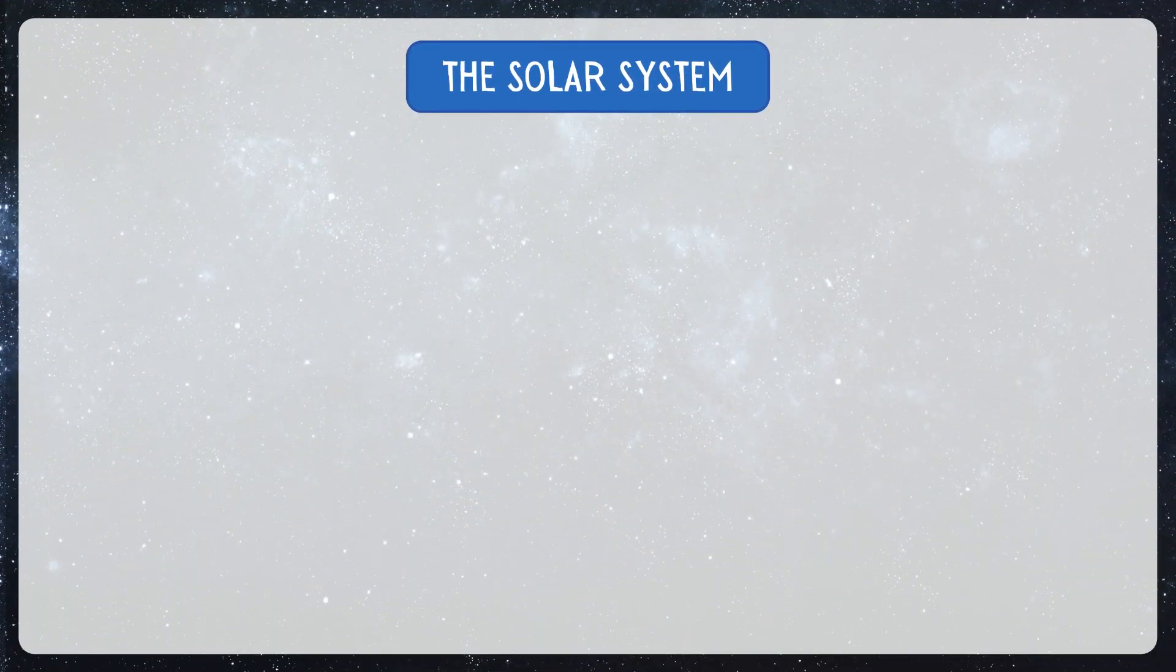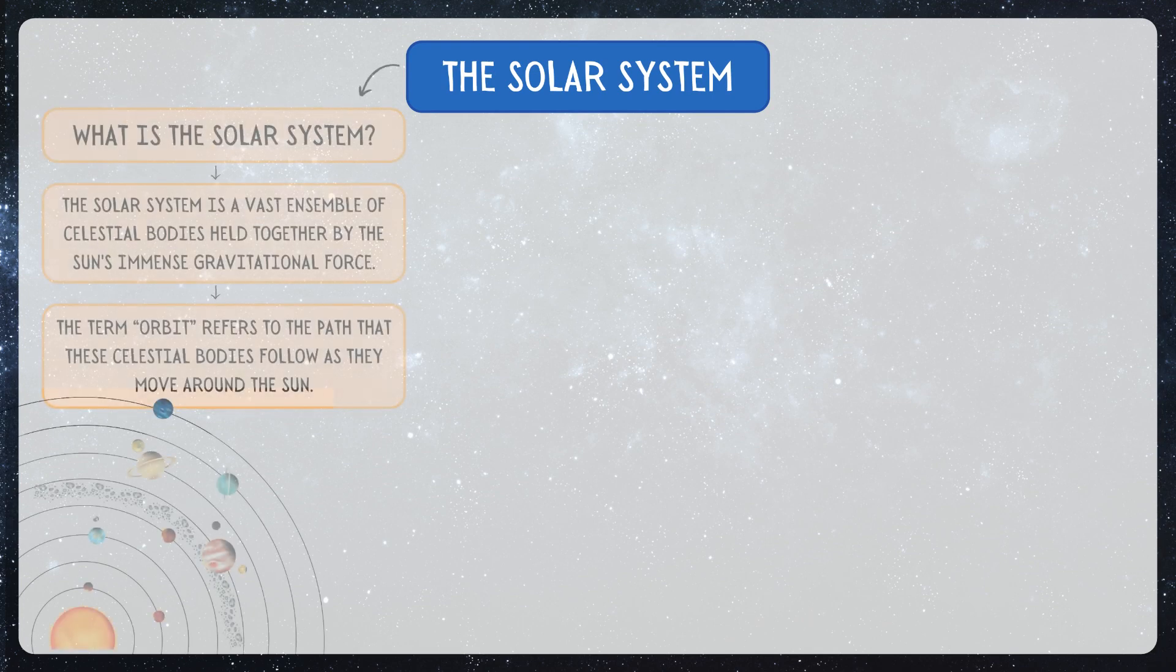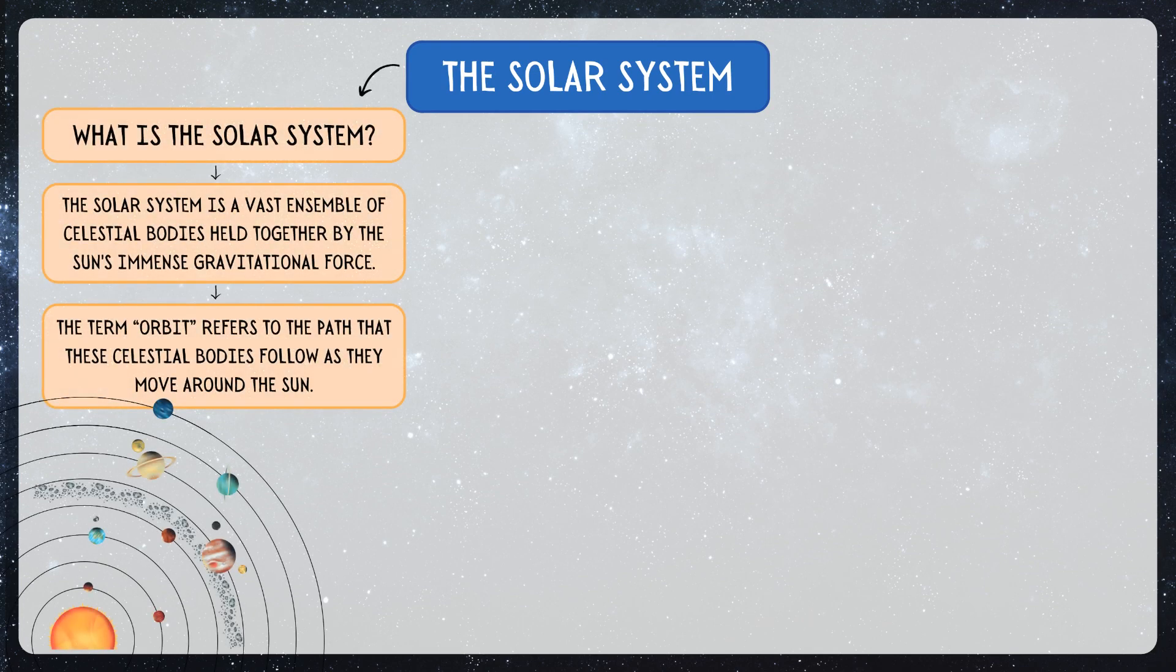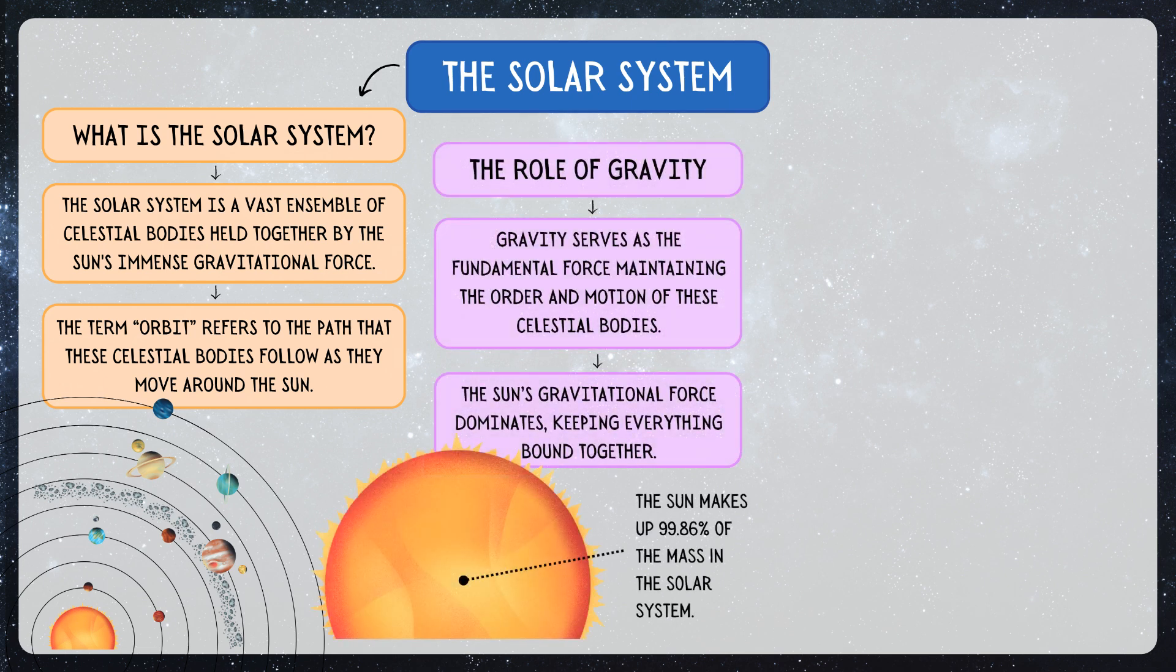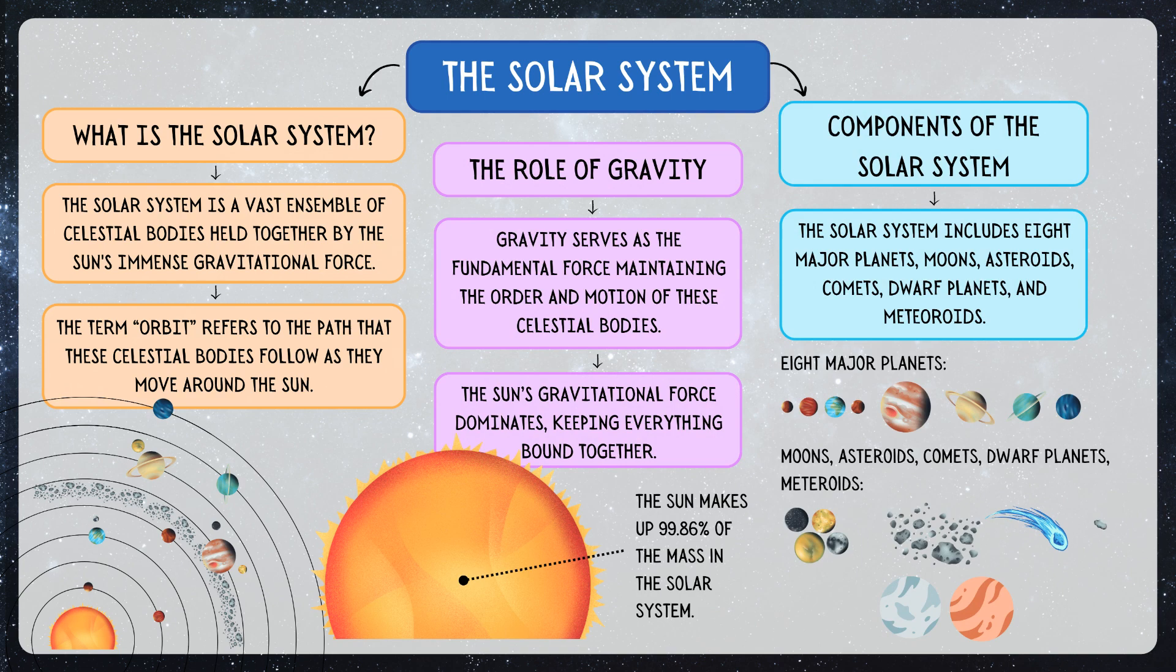In today's lesson, we delved into the solar system and its key components. We learned that the solar system consists of the Sun and everything that orbits it, held together by the Sun's gravitational force. This includes eight major planets, moons, asteroids, comets, dwarf planets, and meteoroids.